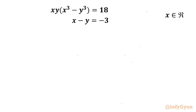Welcome to Infigyan friends. In this video we are going to take up another challenging question from system of equations. The equations are xy times (x³ - y³) = 18 and x - y = -3. We have to find out all real solutions.